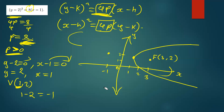Drawing the directrix at x = -1 with dotted lines. These are the key things you need to do when asked to describe a parabola. Sometimes you're just given equations without being told whether it's a parabola, ellipse, or circle. You need to master the general form formats of these equations — once you complete the square, you can determine whether it's a circle, parabola, ellipse, or hyperbola.